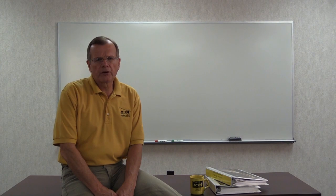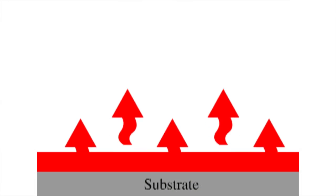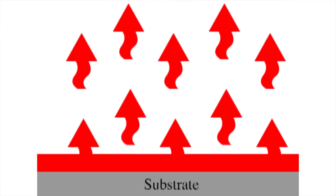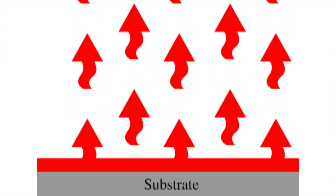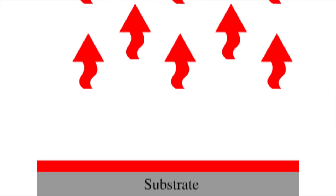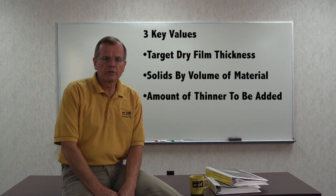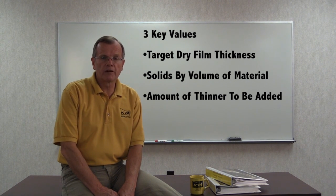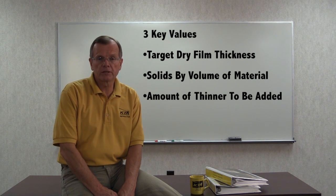The amount of thinner added to the coating will affect the thickness of the wet film being applied. It adds to the volume of the wet paint and is therefore part of the wet film measurement, but the thinner doesn't remain as part of the dry film — it evaporates into the air. Now that we have all three values — our target dry film thickness, the percentage of solids by volume, and the percentage of thinner being added — we can calculate the target wet film thickness.